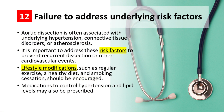Pitfall number 12: Failure to address underlying risk factors. Aortic dissection is often associated with underlying risk factors such as hypertension, connective tissue disorders, or atherosclerosis. It is important to address these risk factors to prevent recurrent dissection or other cardiovascular events. Lifestyle modifications, such as regular exercise, a healthy diet, and smoking cessation, should be encouraged. Medications to control hypertension and lipid levels may also be prescribed.